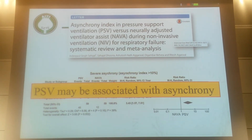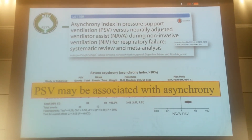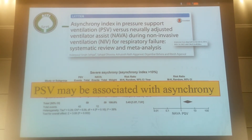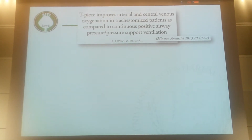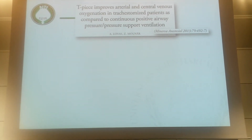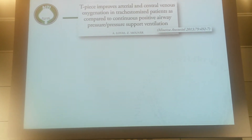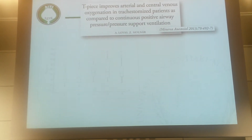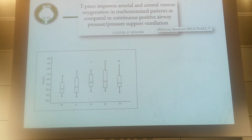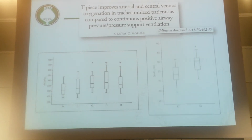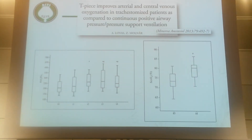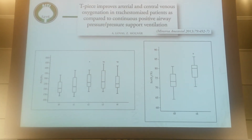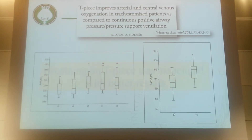To some extent, pressure support ventilation has physiological advantages but we must be aware of potential problems. In a paper published several years ago with my colleague Andras Robas, we put patients on a T-piece trial for spontaneous breathing. We found that on T-piece there was a better PaO2/FiO2 ratio and the ScDO2 showed significant improvement, indicating that patients were better off on T-piece than on pressure support ventilation.